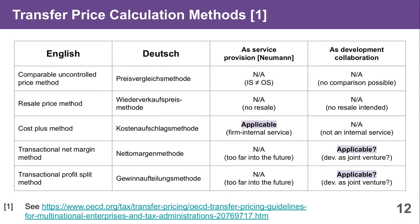For that, the OECD has defined various transfer pricing calculation methods, which you can use to determine the actual price down to the individual contribution, and then aggregate using an accounting perspective. If inner source collaboration were purely service provision, the cost plus method would be a good choice — you calculate the cost of providing a component from India to the US based on labor costs and add a margin. However, for collaboration for mutual benefit, you need different OECD methods: the Transactional Net Margin Method (TNMM) and the Transactional Profit Split Method.